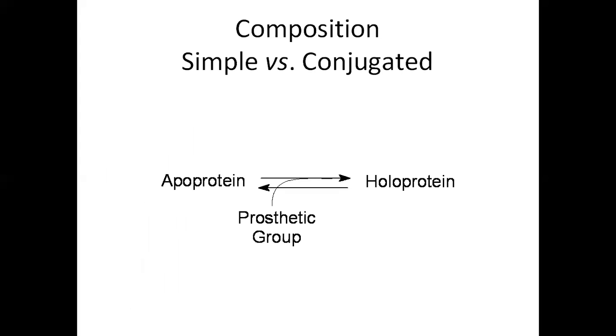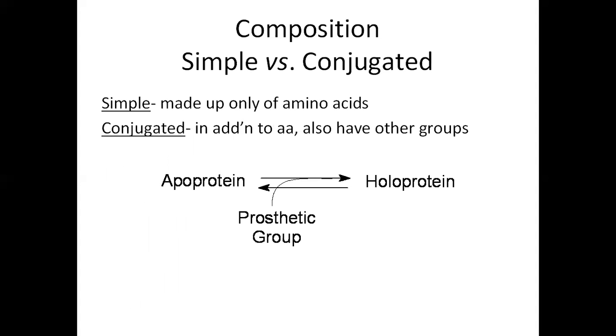One of the most important is whether a protein is simple or conjugated. Simple means that it is made up only of amino acids and conjugated means that it has some other kind of group. Three important terms required to discuss conjugated proteins are apoprotein, holoprotein, and prosthetic group. This small figure shows that when an apoprotein and a prosthetic group join together, they make a holoprotein.